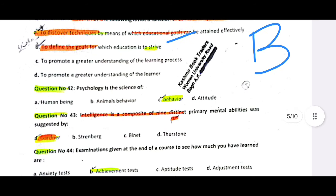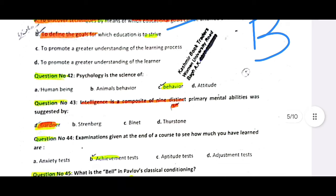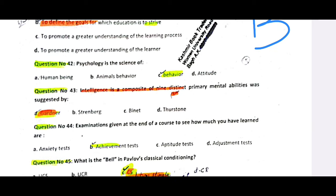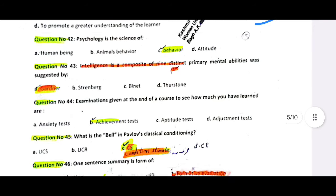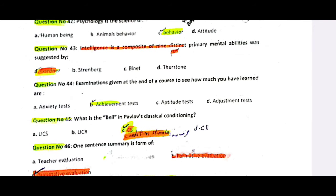Intelligence as a composite of nine distinct primary mental abilities was suggested by Thurstone. Examinations given at the end of a course to measure how much has been learned — this is your achievement test. In classical conditioning, the bell is first a neutral stimulus, then unconditioned, and then it becomes a conditioned stimulus.